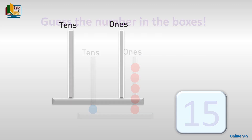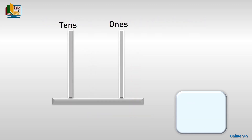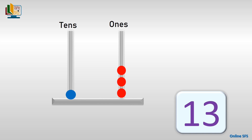Let's see the next one. We have one bead on the tens rod and one, two, three beads on the ones rod. What number does the abacus show? Correct — it shows thirteen on the abacus. One ten and three ones: thirteen.